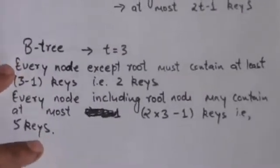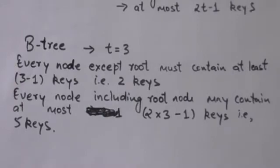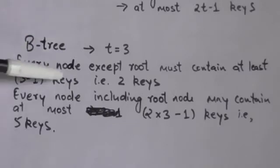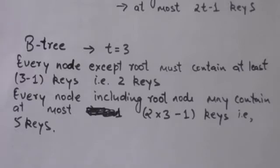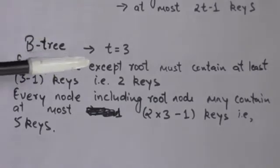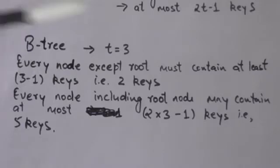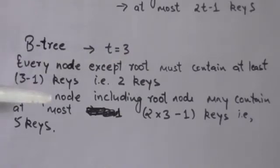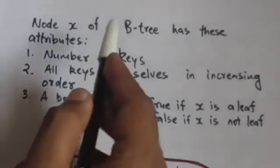For example, if the minimum degree of a B tree is 3, then every node of this B tree except the root node must have at least 3 minus 1 number of keys, that is 2 keys. And every node of this B tree including the root node may contain at most 2 times 3 minus 1 number of keys, that is 5 keys. So every node including the root node of this B tree may contain at most 5 keys.